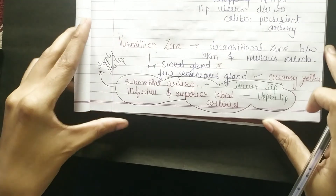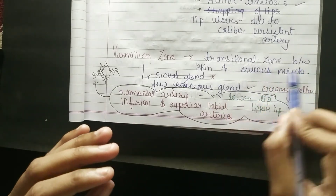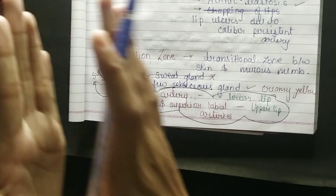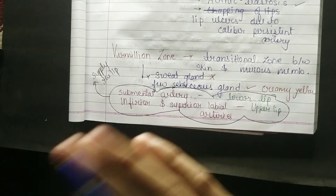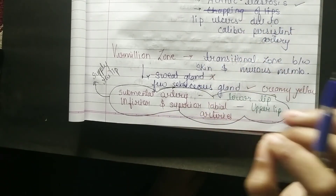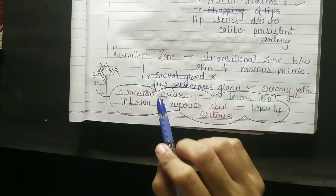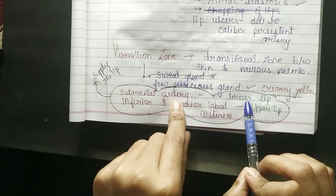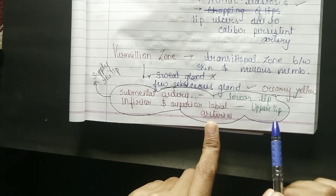The last thing to know in this introduction is the vermilion zone. What is the vermilion zone? It is a transitional zone between skin and mucous membrane. The most important thing about the vermilion zone is that sweat glands are absent and there are very few sebaceous glands, which are creamy yellow in colour. Regarding arterial supply: mental arteries supply the lower lip, and inferior and superior labial arteries supply the upper lip.